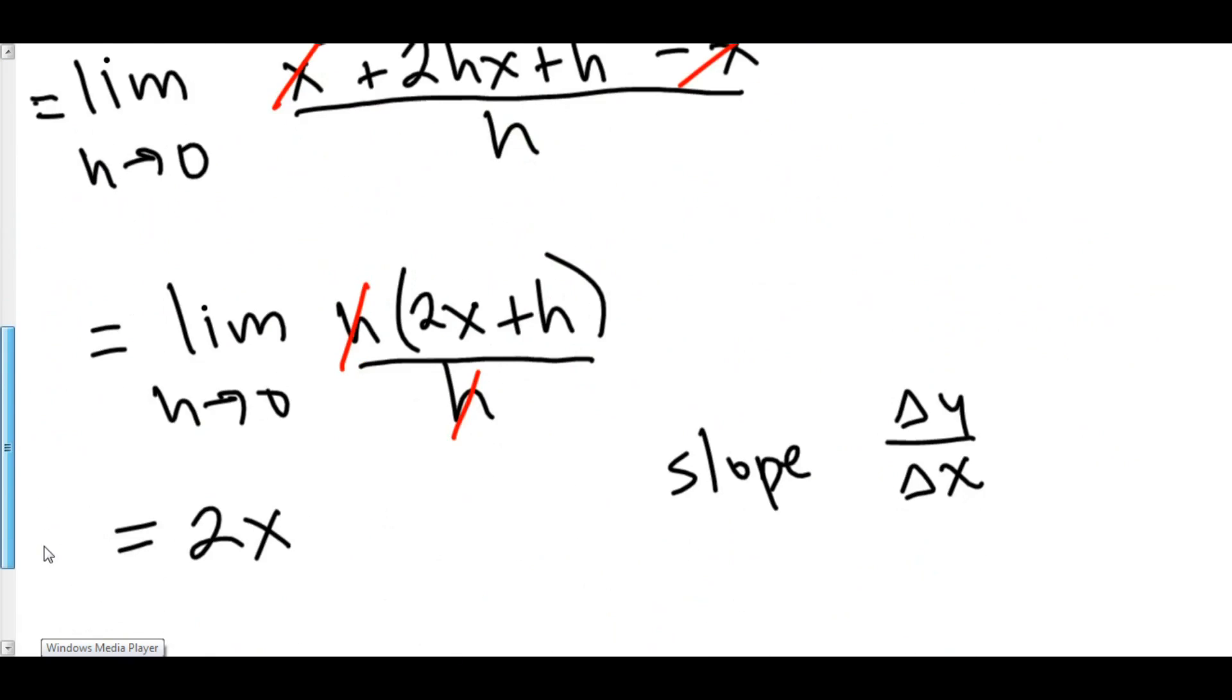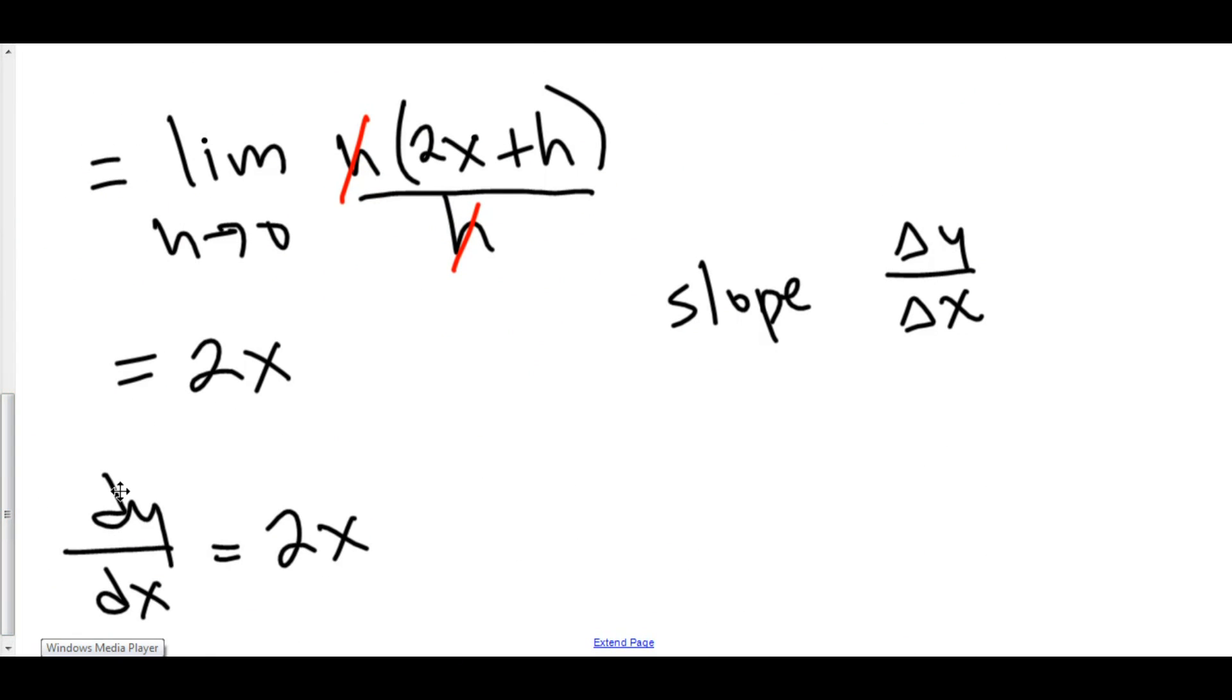It means the change in y over the change in x. But this change is just a tiny sliver. It is so infinitesimally small that we call it a little bit of y, a little bit of x. So, this is a teeny bitty bit of y and a teeny weeny bit of x.